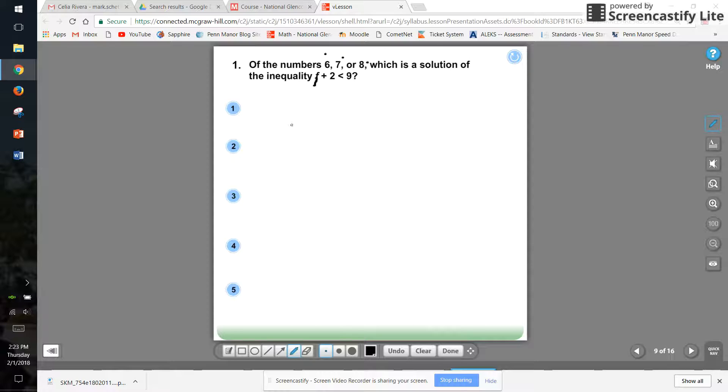So let's try six plus two first. Six plus two is less than nine. Well, six plus two is eight, and eight is less than nine. Makes sense.